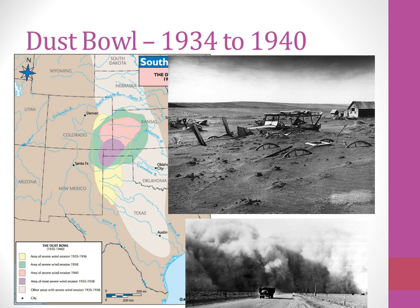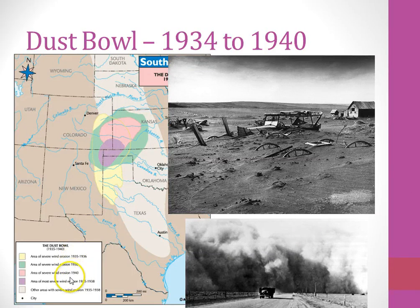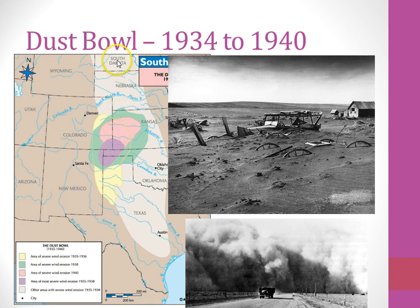One of the disasters you should definitely know about is the Dust Bowl, 1934 to 1940. The map in the background shows the area most affected as far as topsoil lost. Down at the bottom you see severe erosion and the times where that occurred. The massive area affected was in Oklahoma, Kansas, up through the Dakotas, Nebraska, and into Texas.